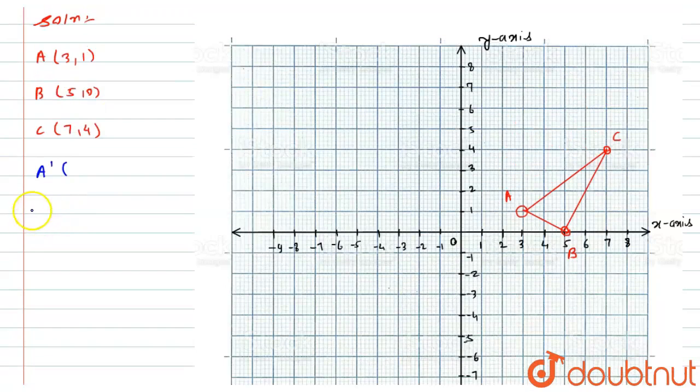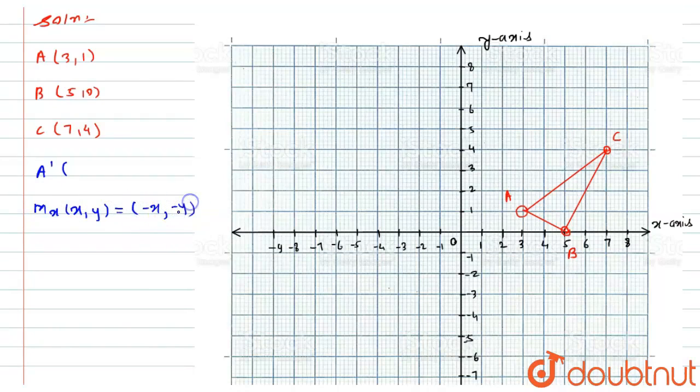So its coordinate will become according to the M(x,y) that will become is equals to minus X, minus of Y. So according to that A dash will become is equals to (-3, -1). Similarly, the B dash point will become (-5,0) and C dash will become (-7, -4).